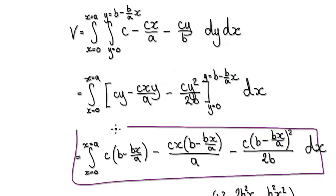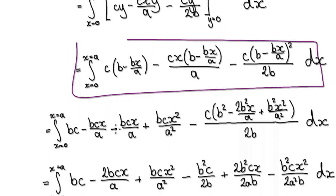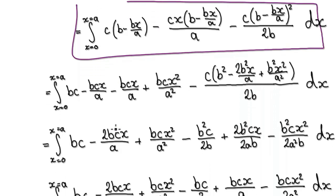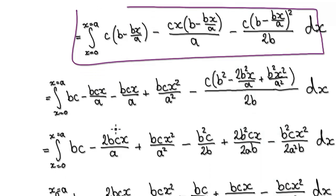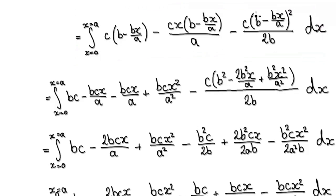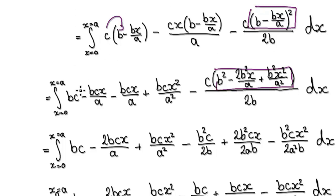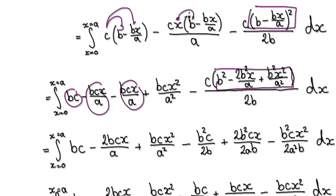Now it's just a matter of tidying this up. When you square this term, it gives you this whole expression here. Multiplying out: this times this gives you this; this times this gives you this; and this times this gives you this.